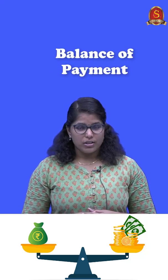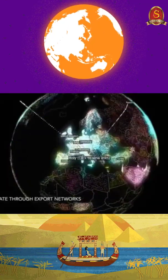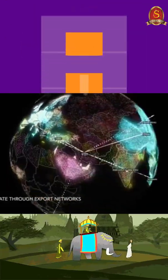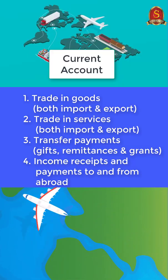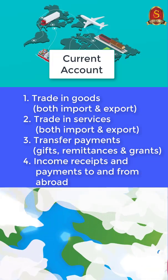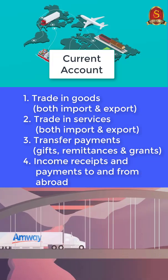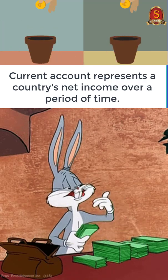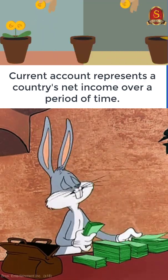We are going to see about an economic term: Balance of Payment. It describes a country's transactions with the rest of the world. It contains two accounts: current account and capital account. Current account includes trade in goods and services, transfer payments, income receipts and payments to and from abroad. The current account represents a country's net income over a period of time.